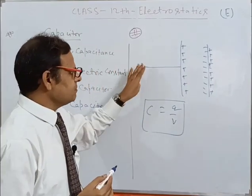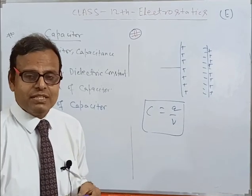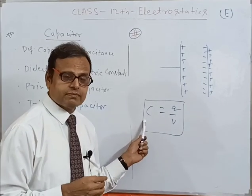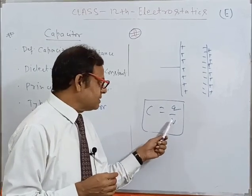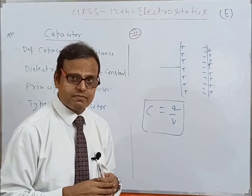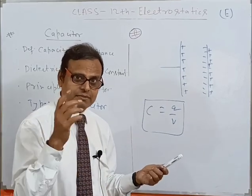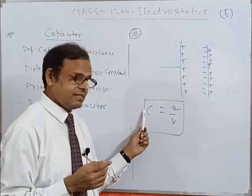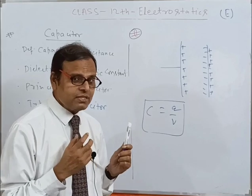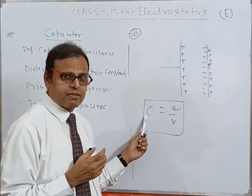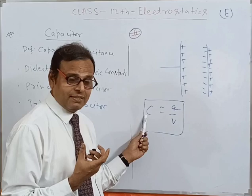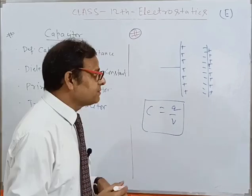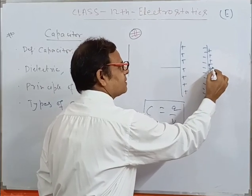Our aim is to increase C — that is, the capacitance of a capacitor. Then C could be increased only after decreasing V. If the denominator decreases, the total value increases. If V decreases, C increases. Our aim is to increase C. So the principle is to increase C — meaning to decrease V. V would be decreased if we are earthing this plate.